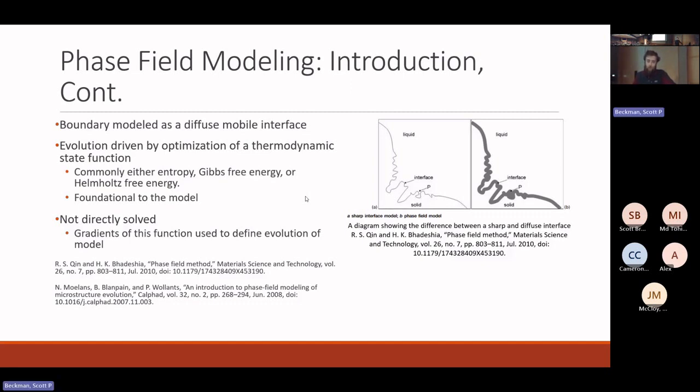This interface and the movement thereof is driven by an optimization of a thermodynamic free energy function. This is usually your entropy, Gibbs free energy, or Helmholtz free energy, though the latter two are pretty similar in this case. And although this equation is foundational to the model—it's basically what defines how this model develops—it is not directly solved in the model. Instead, it's gradients of this function that determine the evolution of the conserved and non-conserved parameters.